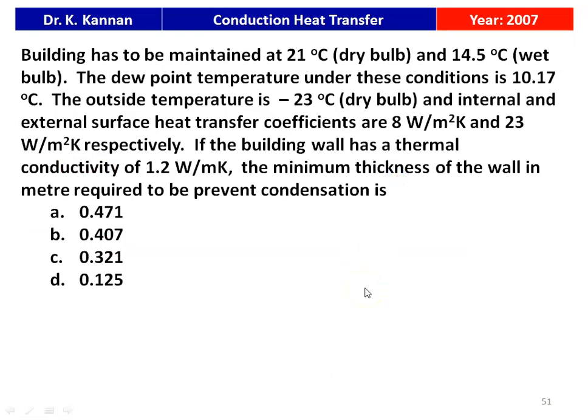The next question from the 2007 question paper: a building is maintained at 25°C dry bulb temperature. The dew point temperature is 10.17°C. Outside temperature is −23°C. Internal and external surface heat transfer coefficients are 8 and 23 W/m²K respectively. Thermal conductivity of wall is 1.2 W/mK. The minimum wall thickness to prevent condensation is required. The wet bulb temperature is not needed for this calculation. The correct answer is 0.407 m.